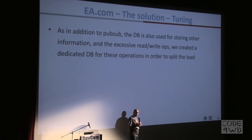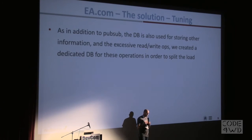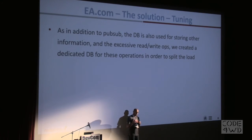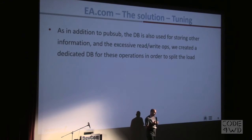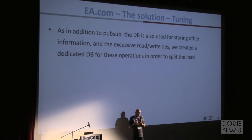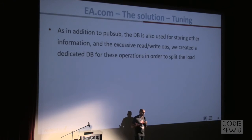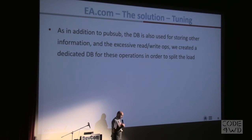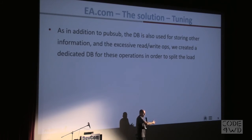It's pointless to save all the data on the same database when you have different use cases. The reason is that Redis is single-threaded — you can host it on the strongest machine with a million CPUs, but it will only ever use one CPU and one thread. So we decided to break it into multiple databases, each using its own thread, which gives you better performance immediately. We split the database into three: one for the chat room, one for presence, and one for all their other business data.